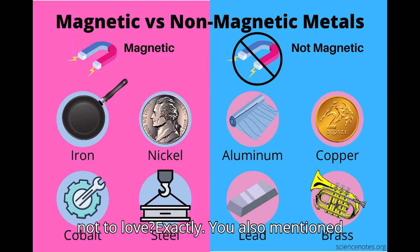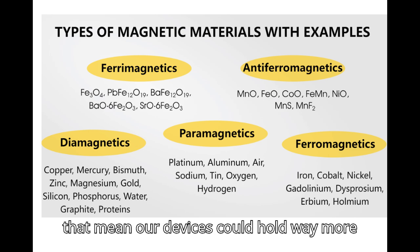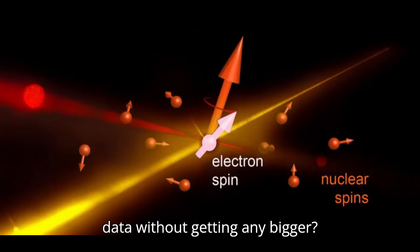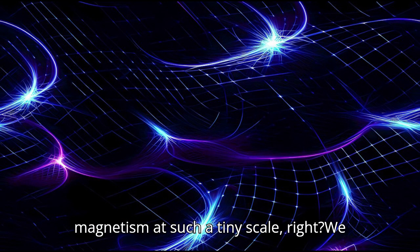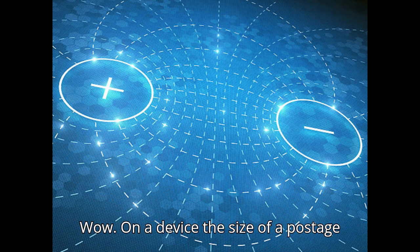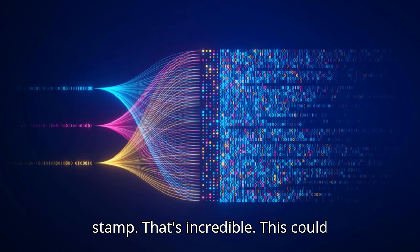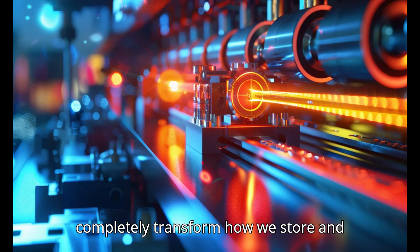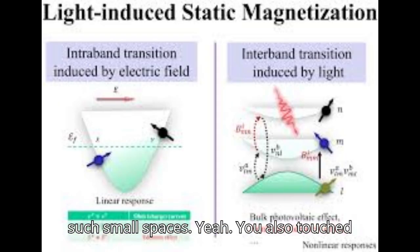You also mentioned increased storage density. Does that mean our devices could hold way more data without getting any bigger? Precisely. Because we're controlling magnetism at such a tiny scale, we could potentially pack data much more tightly. Imagine storing an entire library's worth of information on a device the size of a postage stamp. This could completely transform how we store and access data, from personal devices to massive data centers.